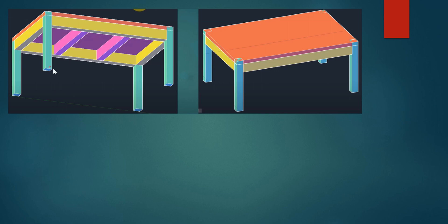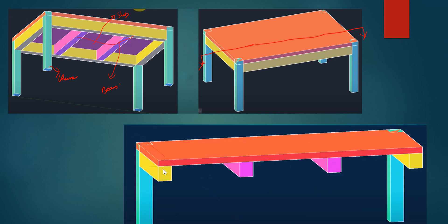Consider a roofing system: here are the columns, the slab, and the beams. If I cut a section through this — shown in top view — I get: the end beam (yellow) appears like an L-beam shape, and the intermediate beam appears as a T-beam shape.